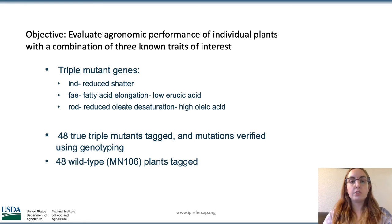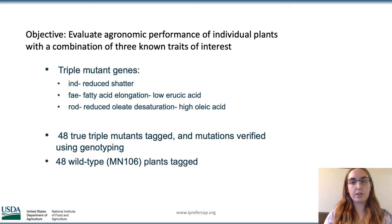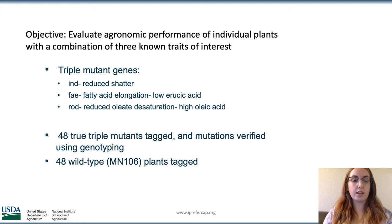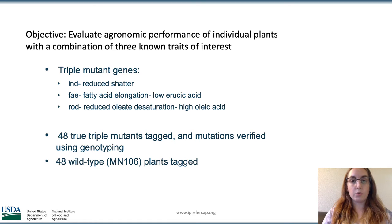The objective of my project was to evaluate the agronomic performance of individual plants that had a known combination of three traits of interest that have been previously identified through previous genetic and breeding work. The three genes we were looking at were the IND gene, which carries the trait for reduced shattering, the FAE gene which stands for fatty acid elongation and carries the trait of low erucic acid, and the RAD gene which stands for reduced oleate desaturation, which carries the trait for high oleic acid.